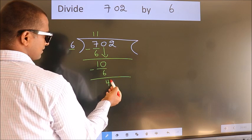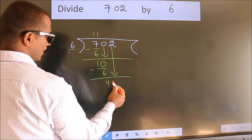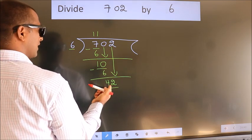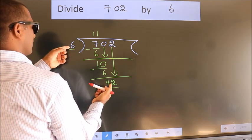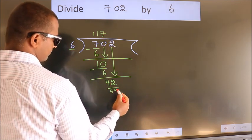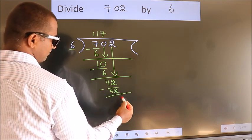After this, bring down the beside number. So 2 down. So 42. When do we get 42 in 6 table? 6 times 7 is 42. Now we subtract. We get 0.